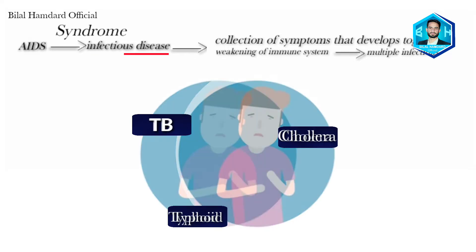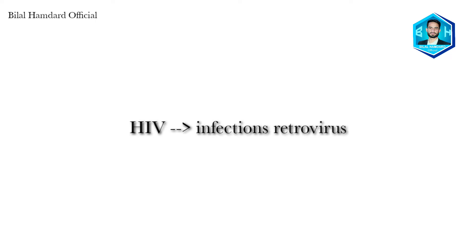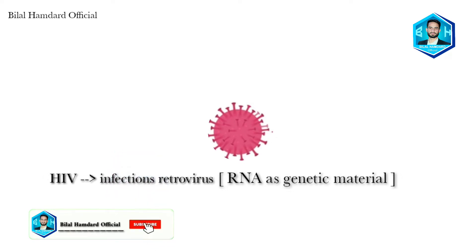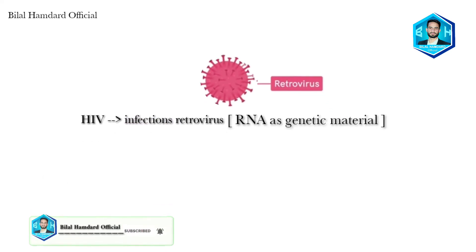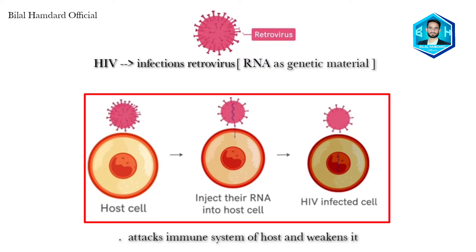HIV is an infectious retrovirus. Retroviruses are viruses classified on the basis of their genetic material — specifically, those viruses which have RNA as the genetic material are called retroviruses. These viruses insert their genetic material into the host cell to cause infection. The major task of this virus is to attack and weaken the immune system of the host. This strategy is used by HIV to conquer the host's body completely.